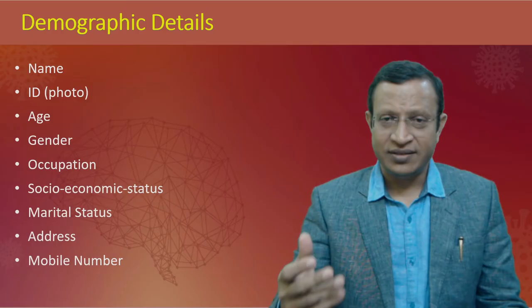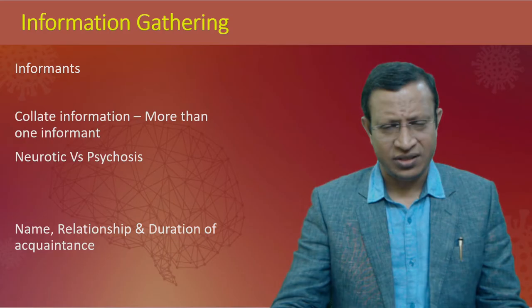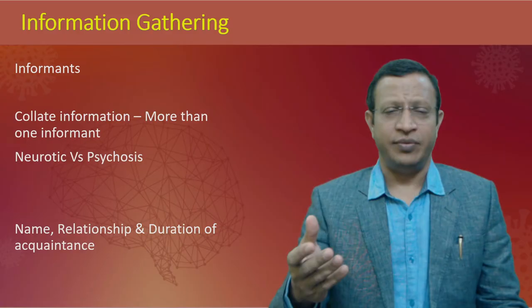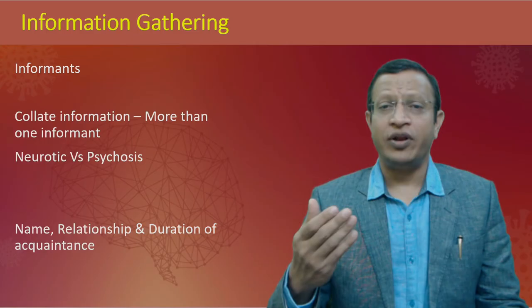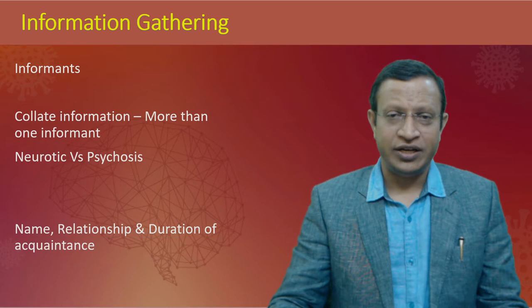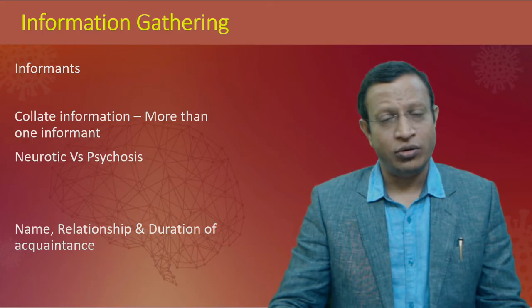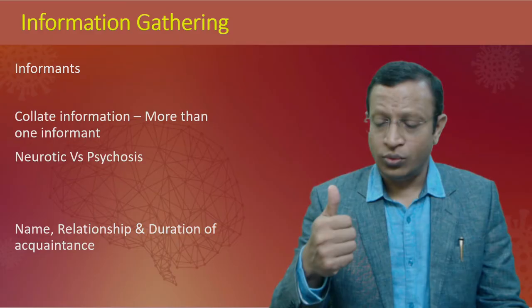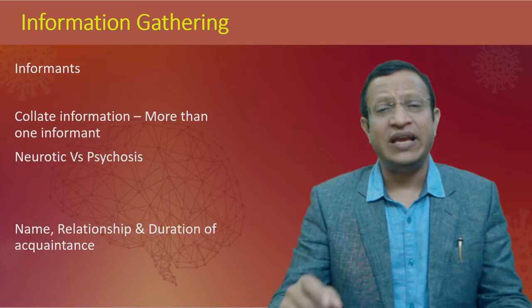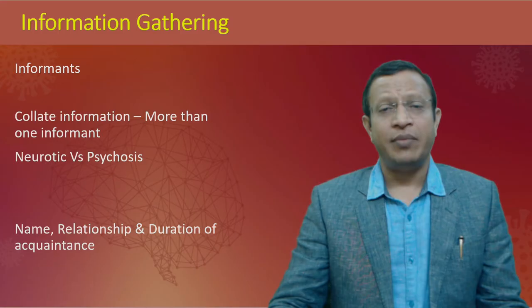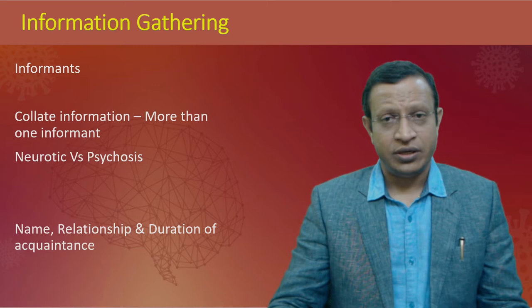Gather information from multiple sources — the more the informants, the better the credibility. For neurotic conditions the patient alone may be sufficient, but for personality disorders it is worthwhile asking family members and friends. In psychotic conditions, interview the patient along with family members. When taking informant details, document their name, relationship, and duration of acquaintance with the patient, as a family member may have been out of contact for some time.